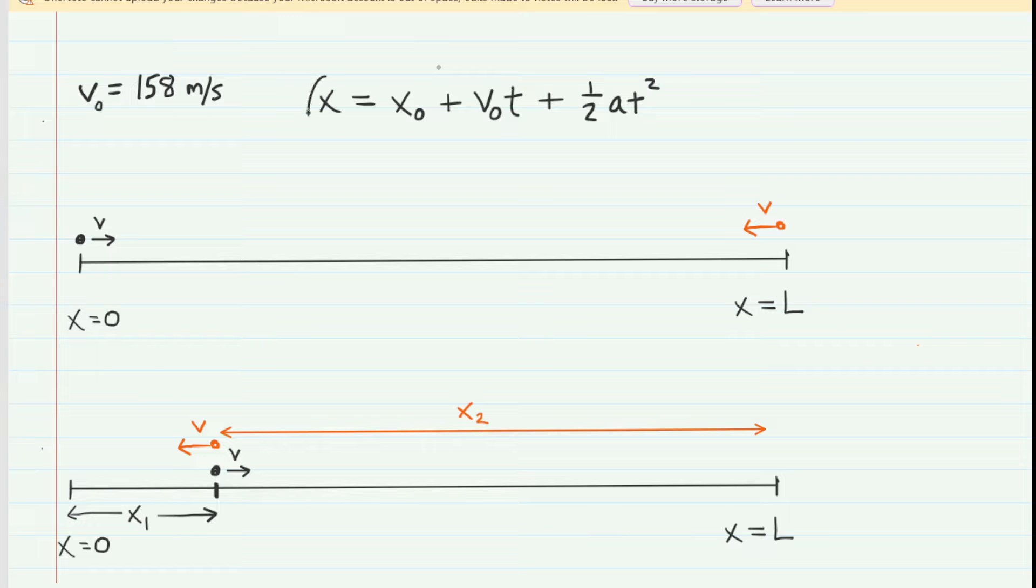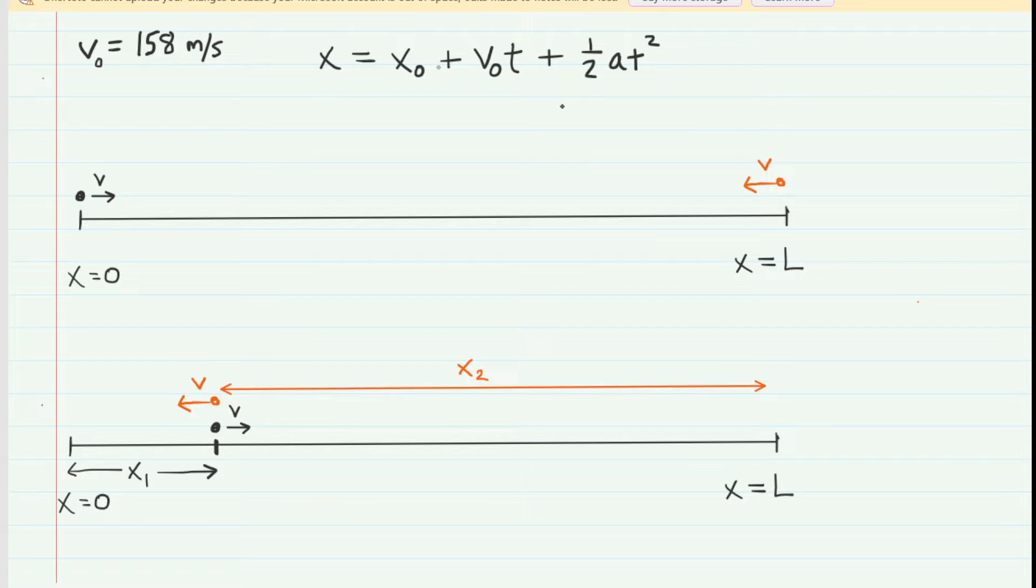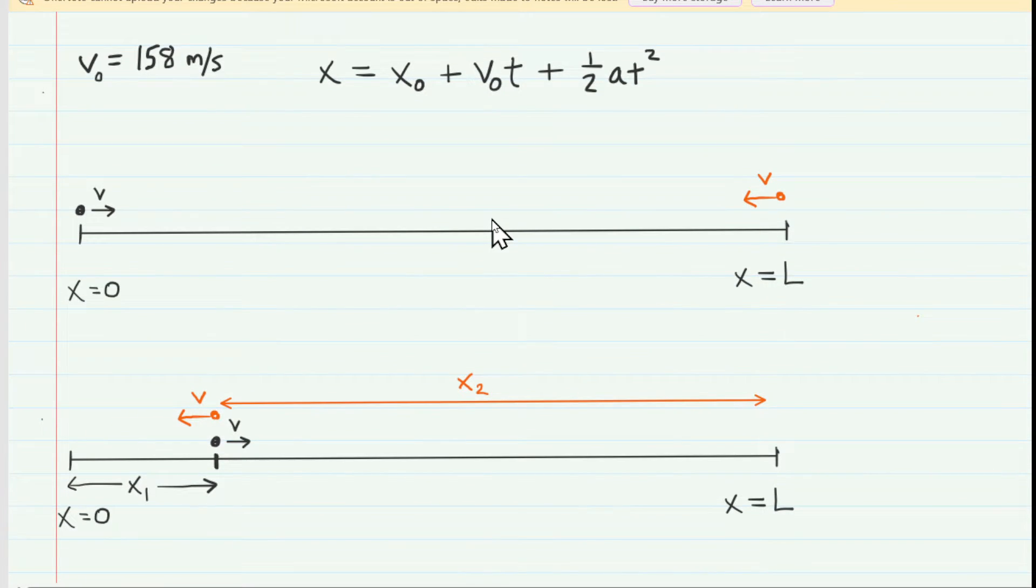So just to revisit that, this is the final x-coordinate, this is the initial x-coordinate, we have the initial velocity multiplied by the time, and then we have this one-half at squared. A is the acceleration, but these pulses are not accelerating. There is no additional force exerted on them once they are sent traveling along the string. So if there's no force, there's no acceleration, this last term will actually drop out, so we can simplify the equation just a little bit.